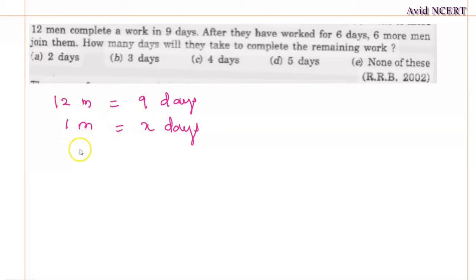Multiplying these two, 1 man can finish the work in 12 into 9, which equals 108 days. So 1 man can complete the work in 108 days.